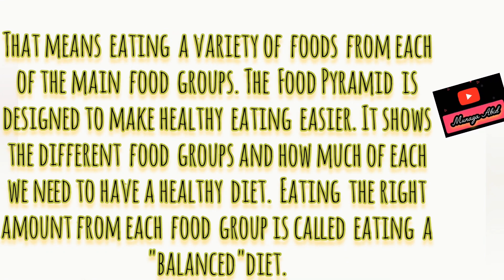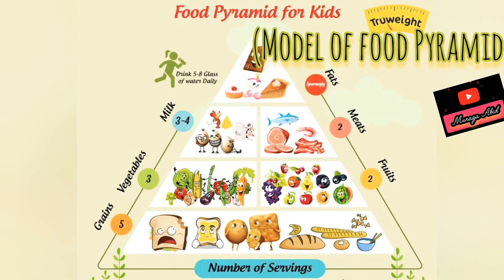That means eating a variety of food from each of the main groups. The food pyramid shows different food groups and how much of each we need. Eating the right amount from each food group is called a balanced diet.